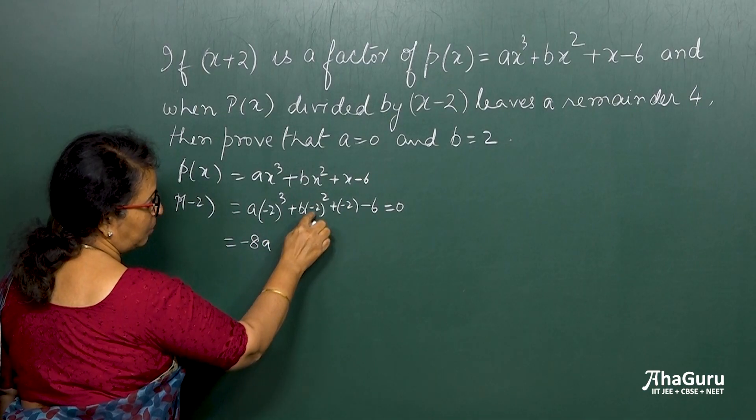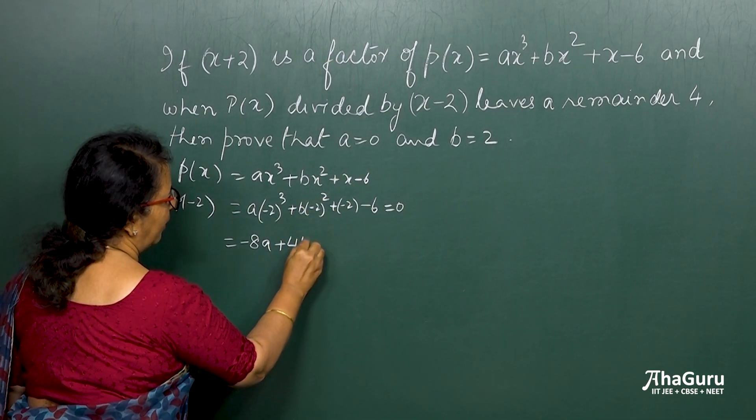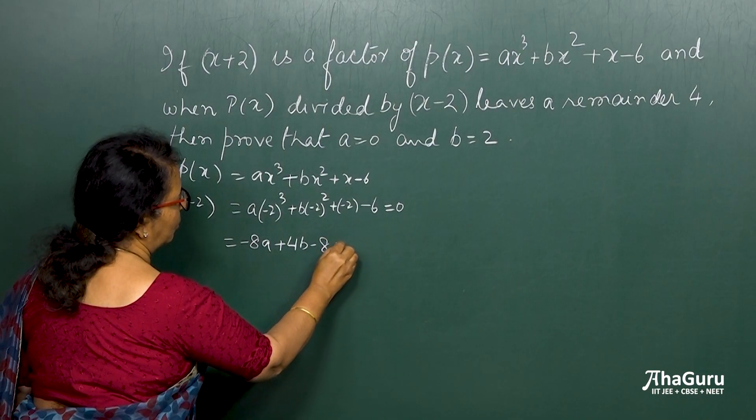So minus 2 cube is minus 8, so minus 8a. This is plus 4, minus 2 into minus 2, so it is plus 4b. And then what is this? Minus 2 and minus 6 will give me minus 8 is equal to 0.